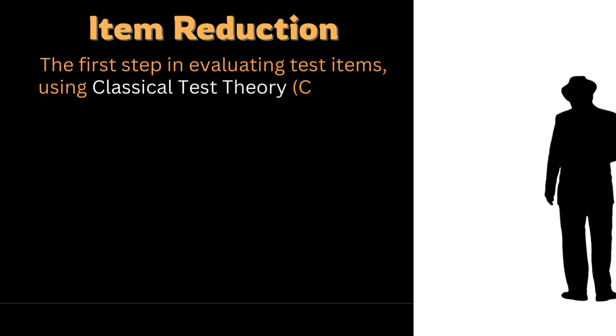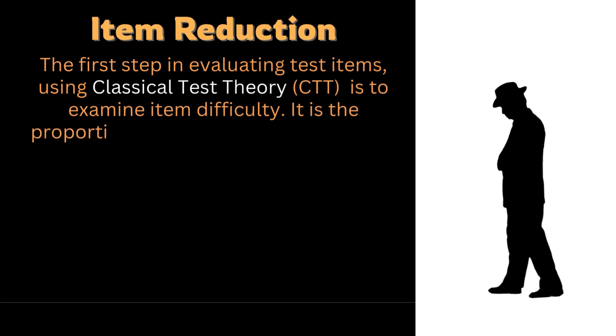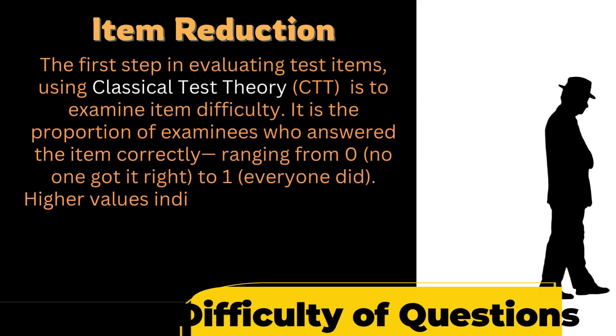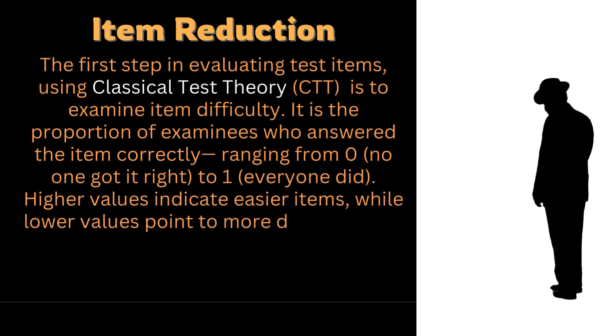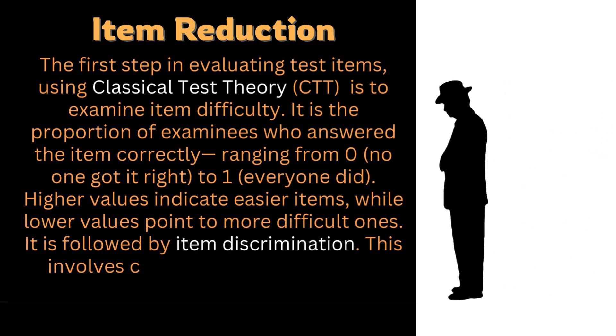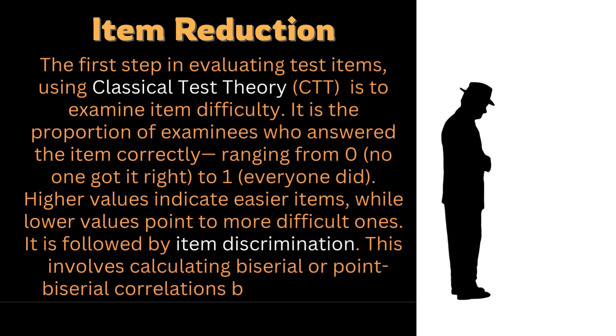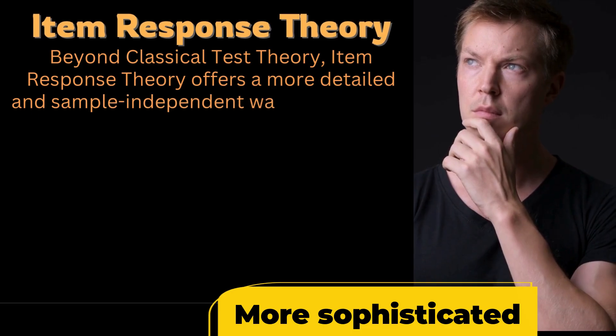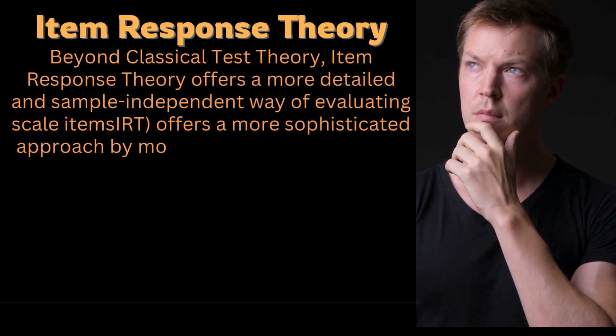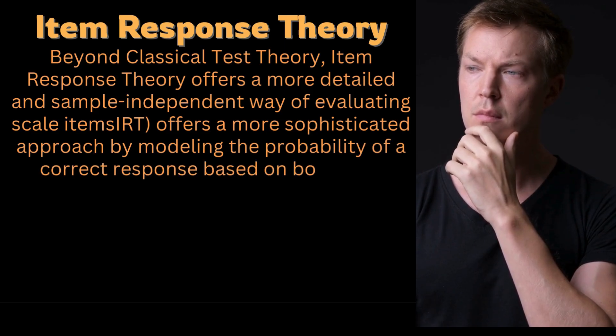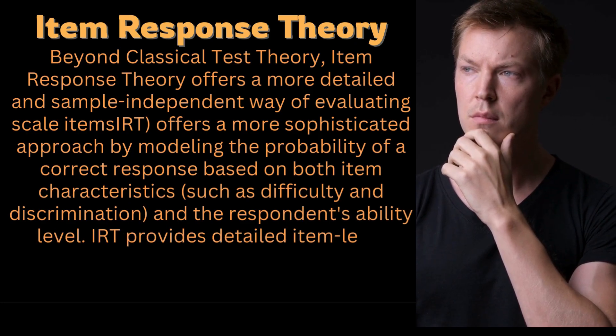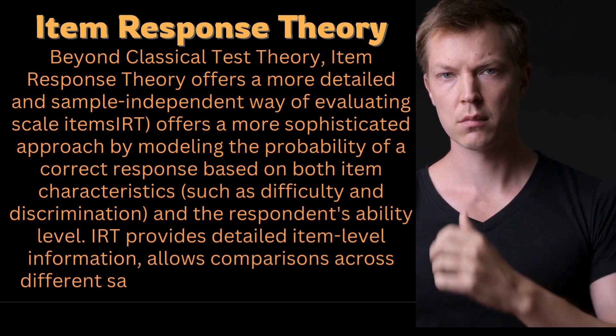The first step in evaluating test items using classical test theory is to examine item difficulty. It is the proportion of examinees who answer the item correctly, ranging from 0 to 1. Higher values indicate easier items, while lower values point to more difficult ones. It is followed by item discrimination. This involves carefully calculating the biserial correlations between an item and the total construct score. Beyond the CTT, item response theory offers a more detailed and sample independent way of evaluating scale items. IRT offers a more sophisticated approach by modeling the probability of a correct response based on both item characteristics and the respondent's ability level. IRT provides detailed item level information.